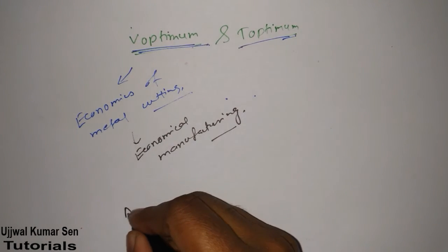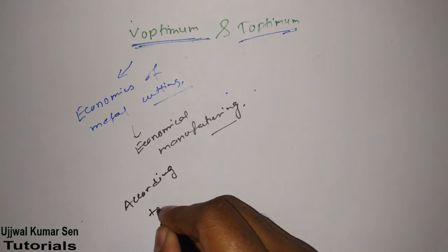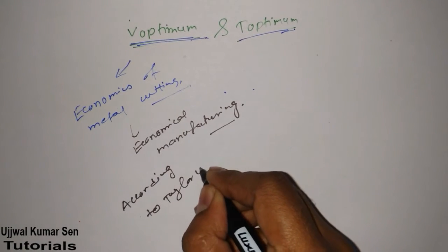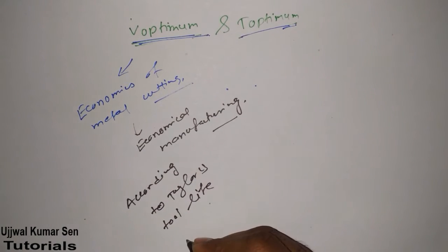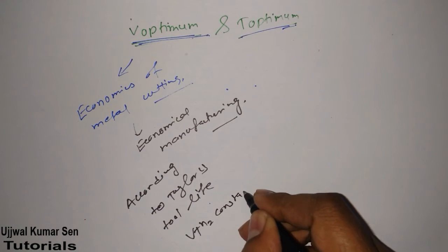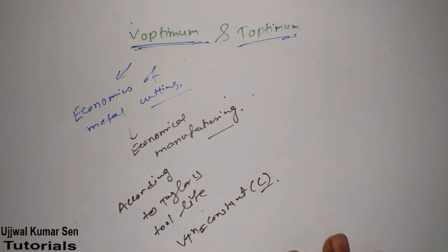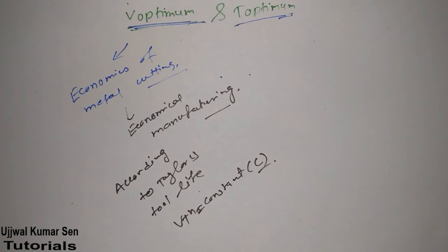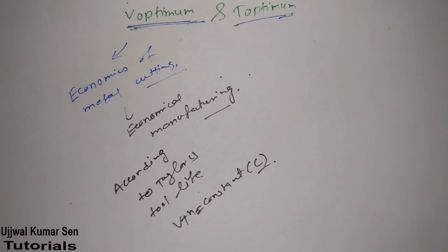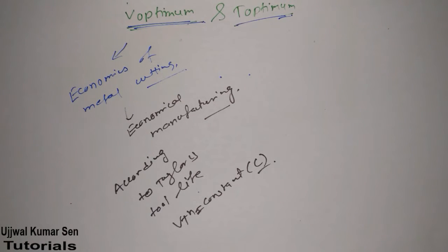According to Taylor's Tool Life equation, we have: V × T to the power n = C (constant). By seeing this equation, you can say that V and T are both interrelated. Here, V stands for speed, T for tool life, N for the tool life exponent, and C is a constant.